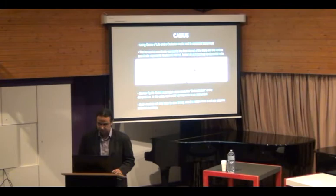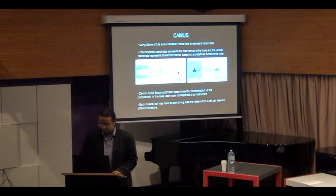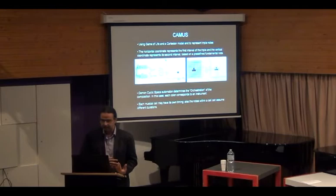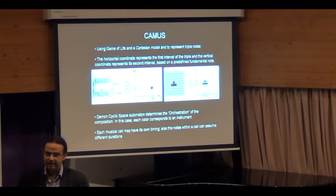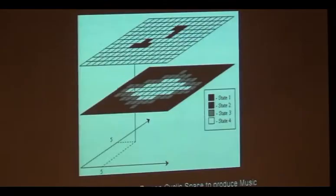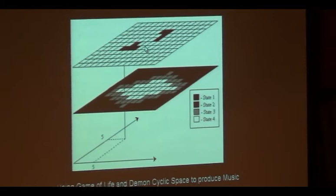Another program is CA News, which uses a Cartesian model. Each cell has two dimensions, X and Y, which can be converted to two intervals to form a triad. It used Game of Life in combination with Demographic Cyclic Space — Demographic Cyclic Space for orchestration or timbre, and Game of Life for pitch.